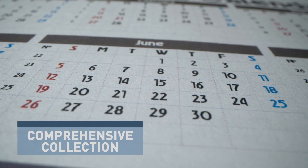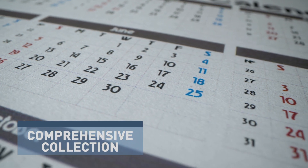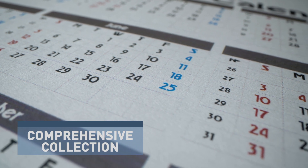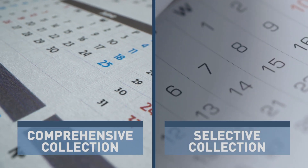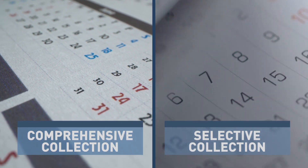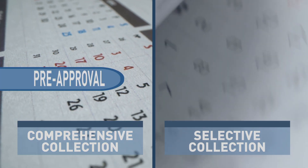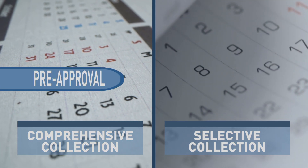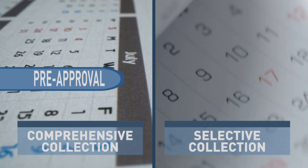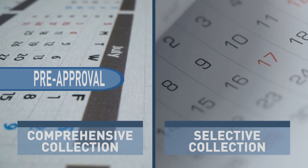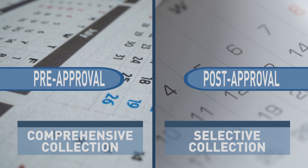Comprehensive collection could also be used for the trial's initial period and selective collection for the remainder. For example, a large trial that uses comprehensive collection in the pre-approval stage and is ongoing when the drug is approved could be changed to selective collection after approval.